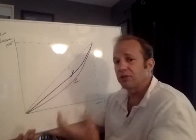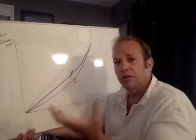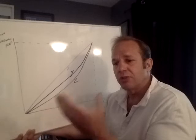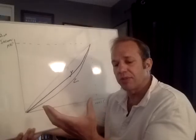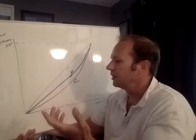Income inequality would have fallen because a lot of people are at their peak earning age, so we have a large percentage of the population earning high income.